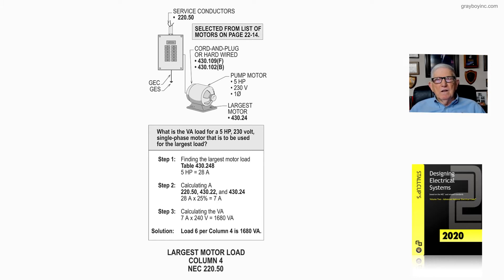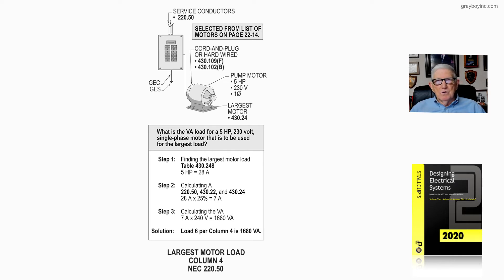Now 220.50 — and you could also reference 220.14C — basically, Article 220 is telling the user that when it comes to motors, in most all cases, you have to go over to Article 430 to determine the calculation percentages to use. Also, table 220.3 would send you over to Article 430, specifically Part 2.